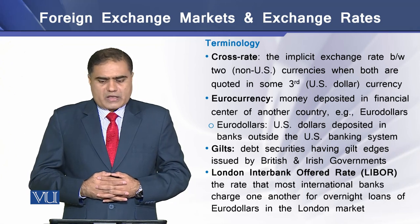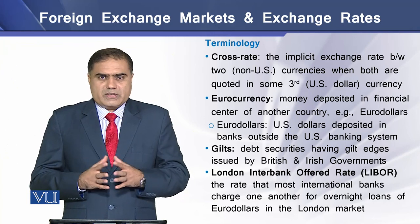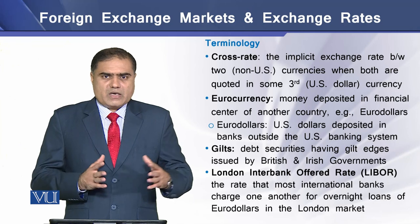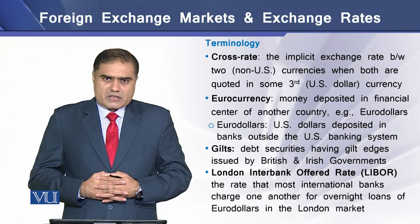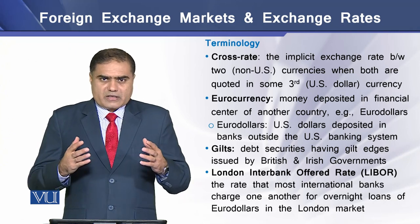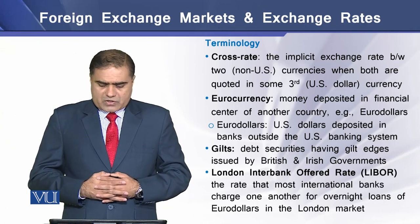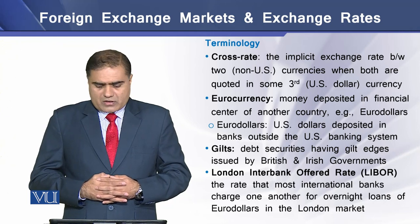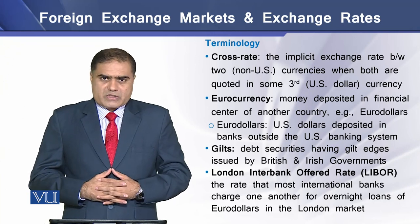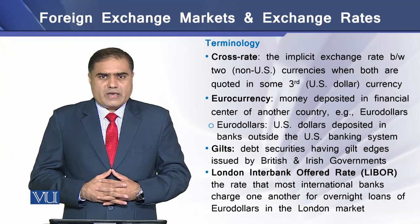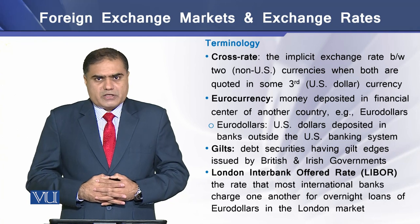Eurodollars are U.S. currency-denominated dollars that are deposited in banks outside the U.S. banking system. Gilts are debt securities having gilt edges, issued by the British and Irish governments. LIBOR, or the London Interbank Offered Rate, is the rate that most international banks charge one another for overnight loans of Eurodollars in the London market.